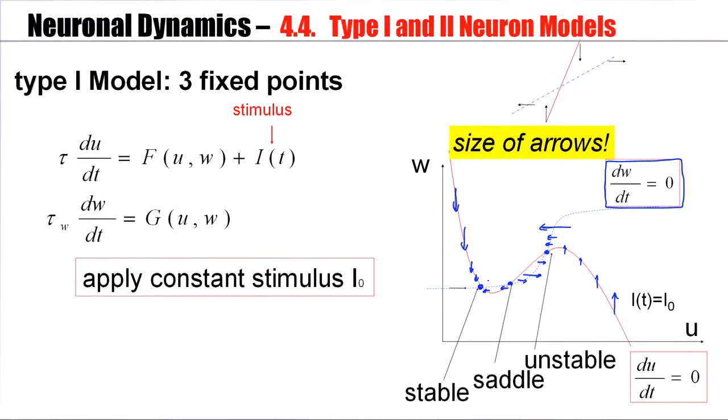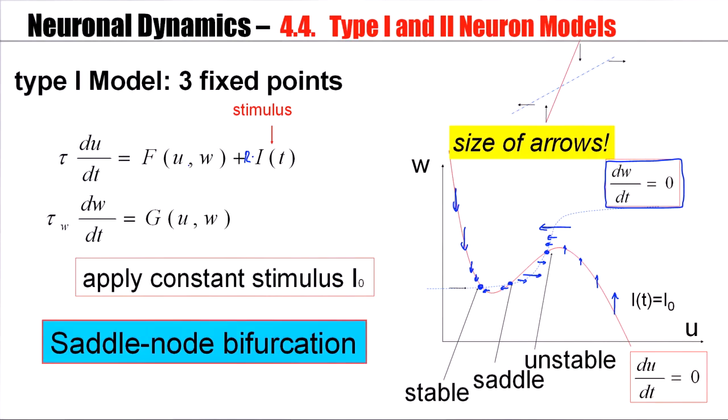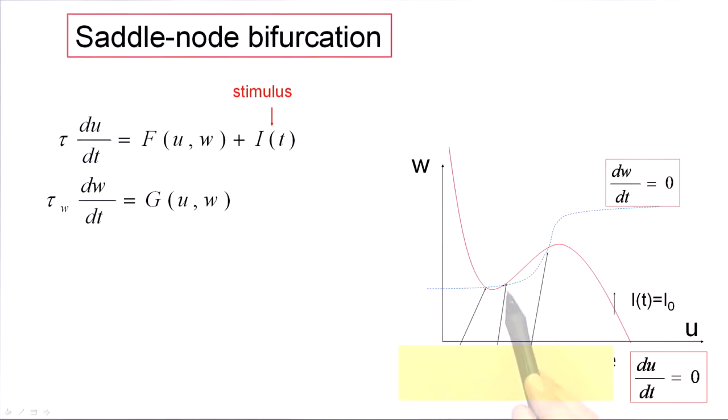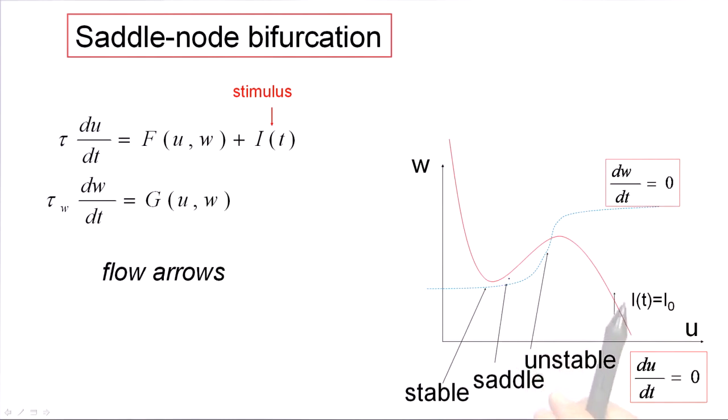Now, we apply a constant stimulus. A constant stimulus will shift the curve upwards. There might be a slight change in the shape of the nullcline, but essentially it's a shift upwards. And if you shift the nullcline upwards, what we see is that these fixed points, they disappear. Previously we said, I have big flow arrows here, I have big flow arrows there. However, close to the fixed point, the arrows were very small.